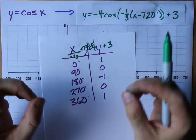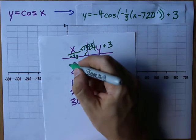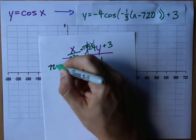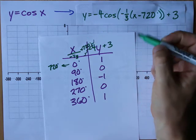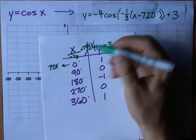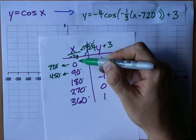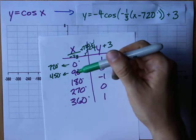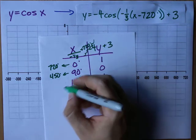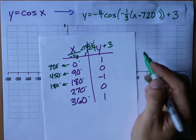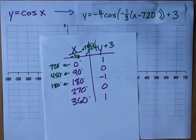Do you want to use your calculator for that? No judgements — I'm going to do it in my head. Zero divided by negative a third is zero, plus 720 is 720. 90 divided by negative a third is negative 270. When I add that to 720, I get 450. 180 divided by negative a third gives me negative 540. Add that to 720, and I get 180 degrees. 270 divided by negative a third — I'll get a calculator.